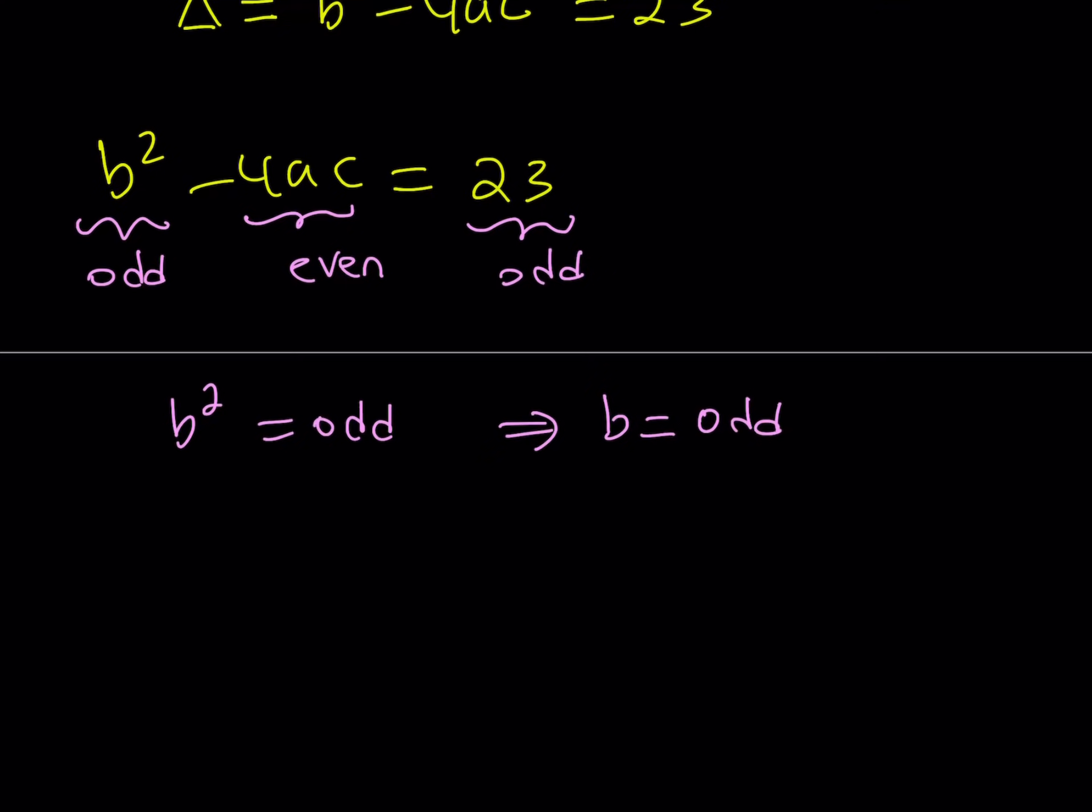Since b is odd, I can replace b with 2n plus 1, where n is an integer. 2n plus 1 represents an odd number, and we're going to substitute this. As you know, substitution is a very important rule. It plays a very important role in solving very many problems. Let's take a look. I'm going to replace b with 2n plus 1 here.